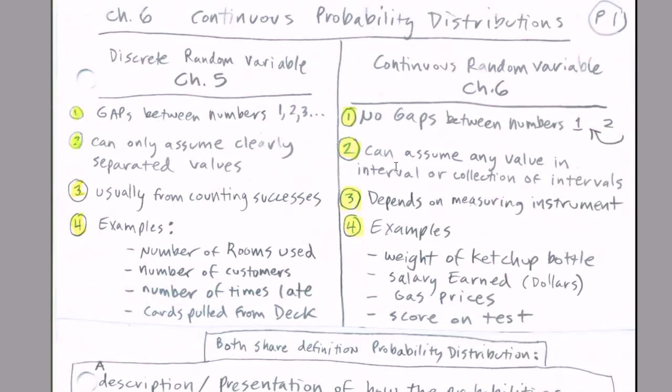Now, continuous random variables. There's no gaps between numbers. For any two numbers, we could have as many possible values between there. It depends on the measuring instrument. The continuous random variable can assume any value in an interval or collection of intervals. Examples: weight of ketchup bottle, salary earned. Now remember, dollars seem like discrete, but they're really not, because we could chop it up into partial pennies as fine as we would like. Gas prices, scores on test.